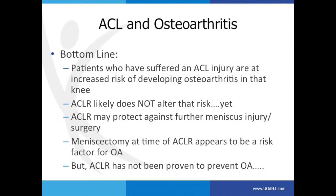So does ACL surgery alter the natural history of ACL injury? A systematic review — only level three evidence, but with a broad range of data and 14-year follow-up — noted that patients who underwent ACL reconstruction had fewer subsequent meniscus injuries, less need for further surgery, and better Tegner activity level scores compared to non-operative treatment. However, in terms of arthritis, there was no difference. Patients who have suffered an ACL injury are at increased risk of developing osteoarthritis. ACL reconstruction does not alter that risk, at least not yet. ACL reconstruction does appear to protect against further meniscus injury, but meniscectomy at the time of reconstruction remains a risk factor for osteoarthritis.